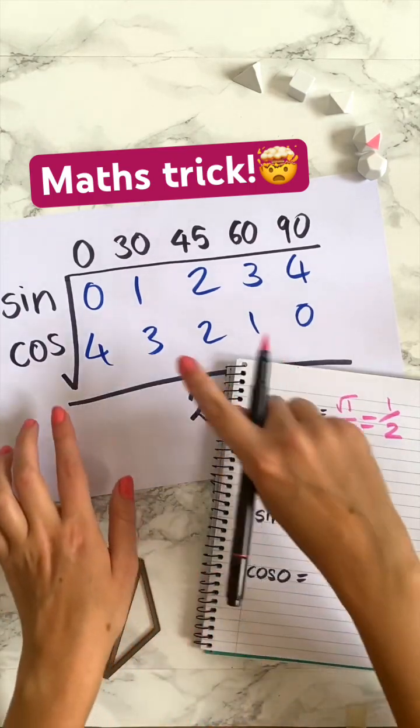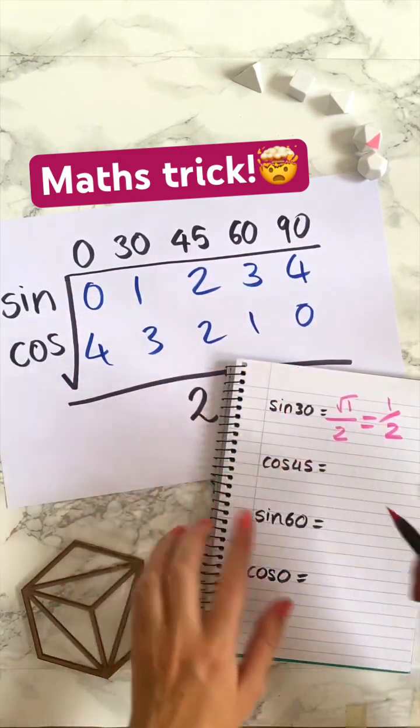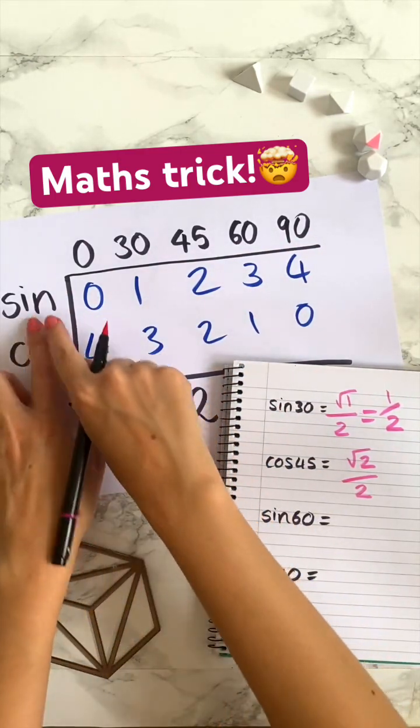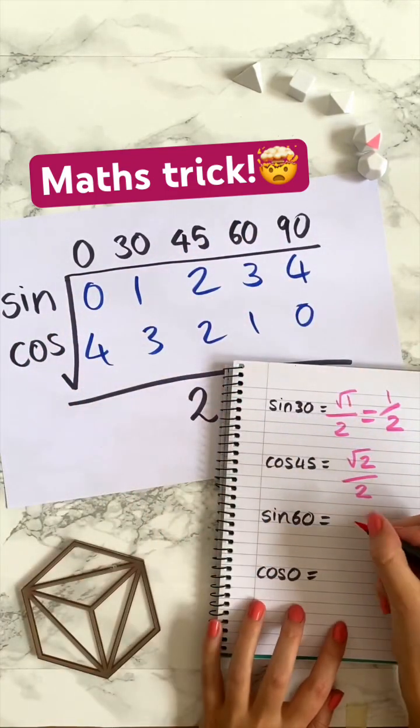Cos 45, well we go to the cos row cos 45, so it's the square root of 2 over 2. Sine 60, we go to the sine row and the 60 column, sine 60 is the square root of 3 over 2.